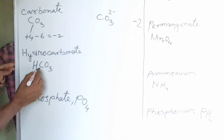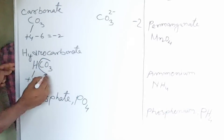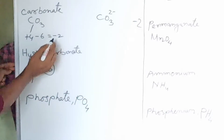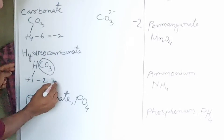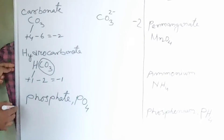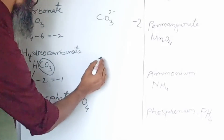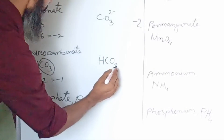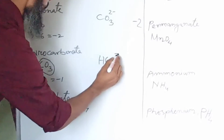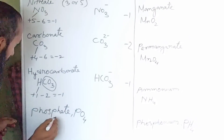Now let's see hydrocarbonate (bicarbonate). Hydrogen has valency 1 and it is electropositive. We have already found the valency of the carbonate group as minus 2. So plus 1 minus 2 gives us valency minus 1. Its symbol becomes HCO3 1-minus.